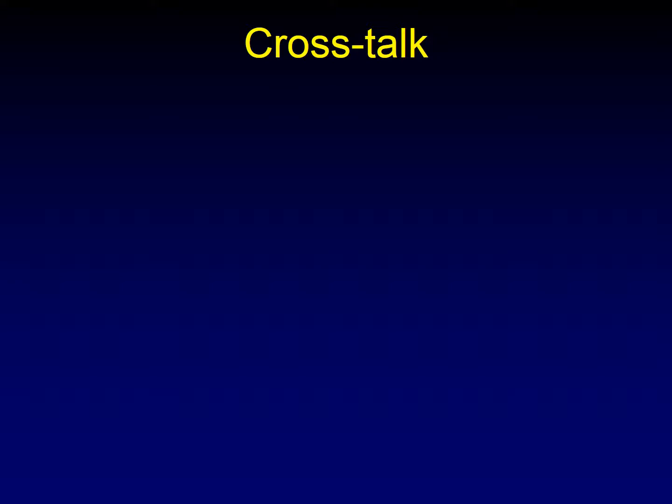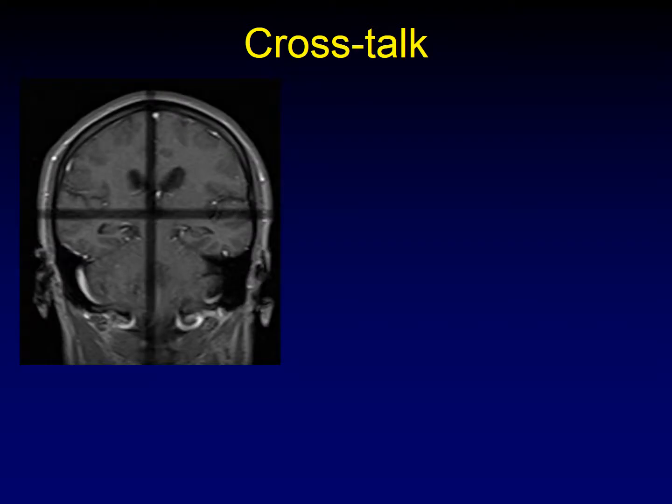To understand that interleaving artifact, we should first talk about the crosstalk artifact. Crosstalk artifact happens when two images are acquired either at the same time or one right after each other, and they are too close together or they cross one another. You can see this pretty frequently on MR images. For example, if you try to do all of your initial prescription images at the same time, the sagittal, coronal, and axial images will crosstalk with each other, creating dark bands.